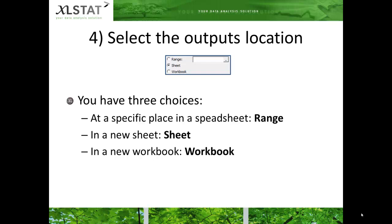Finally, in the General tab, you can decide where the plot should be displayed. You have three choices. You can place them at a specific place in a spreadsheet — in this case, select the option Range. The outputs can be displayed in a new sheet — in this case, select the option Sheet. The last option enables you to place the results in a new workbook; this option is Workbook.